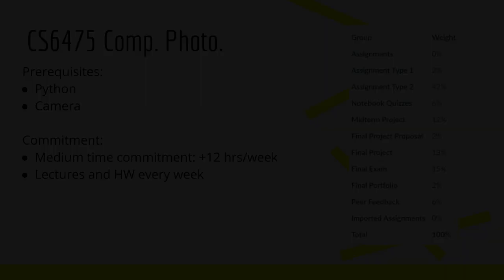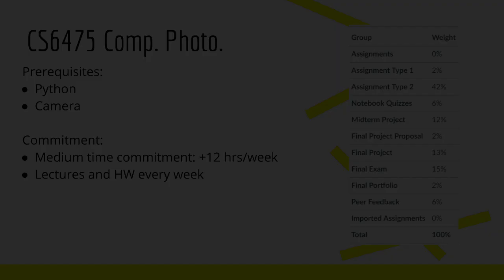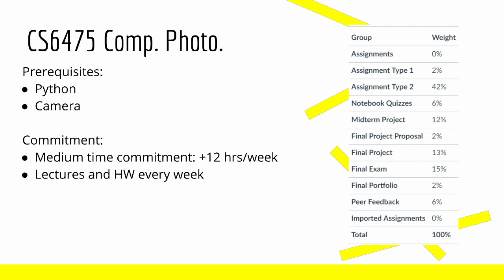Here we have how the grade is broken down. Assignment type 1 is just that first homework, which was pretty simple, and assignment type 2 covers all the different types of homeworks. The notebook quizzes are 6%. The midterm is a pretty large 12% — as I said, that midterm really does take a bit of time. I haven't gotten to the final proposals and final projects yet, so I can't really speak to that.